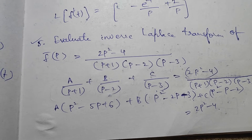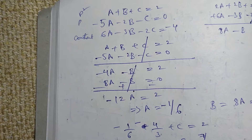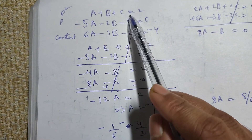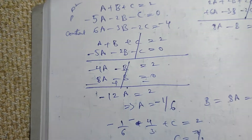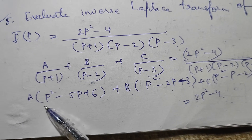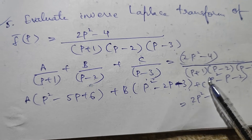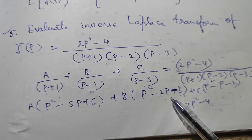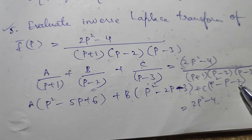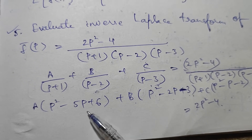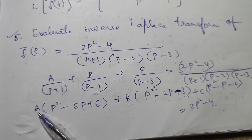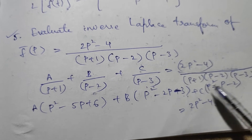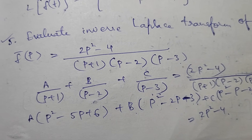Checking and equating the coefficients, we get: for p², A + B + C = 2; for p, -5A - 2B - C = 0; and for the constant terms, 6A - 3B - 2C = -4. So these are the three equations we need to solve to find A, B, and C.